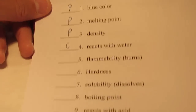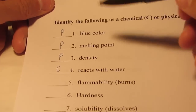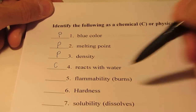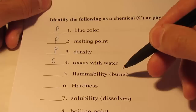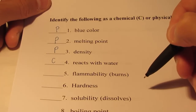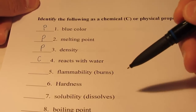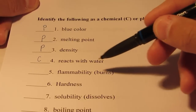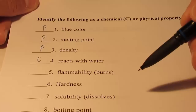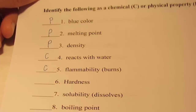Let me do one more — flammability. Gasoline is flammable. After I determine that gasoline is flammable, is it still gasoline, or have I changed its identity? It's now carbon dioxide and water vapor after I've burned gasoline. So I've changed the chemical identity — it's not a physical property, it is a chemical property.